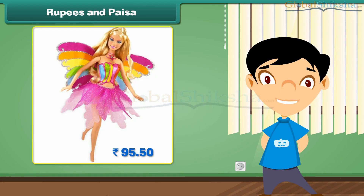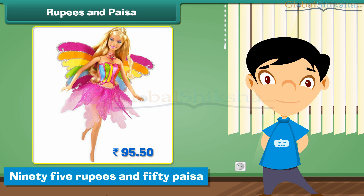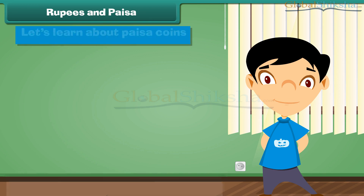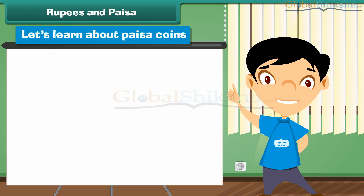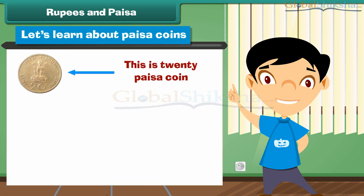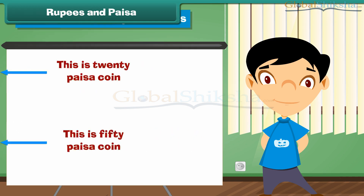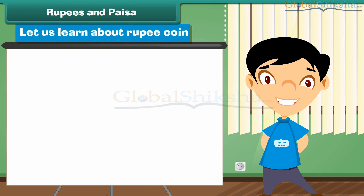Look at this Barbie doll. The price is written on its label. We read the price as 95 rupees and 50 paise. Let's learn about paise coins. This is a 20 paise coin. This is a 50 paise coin.